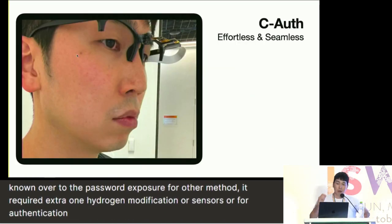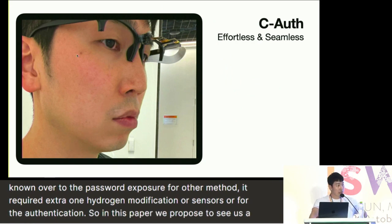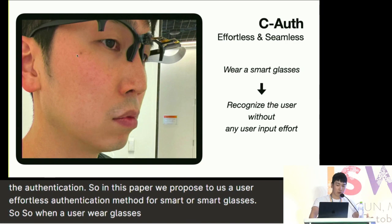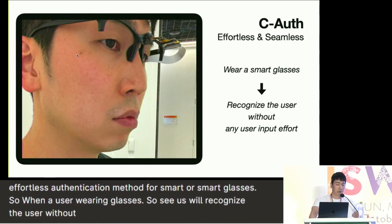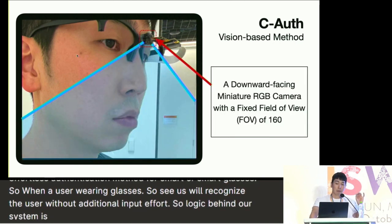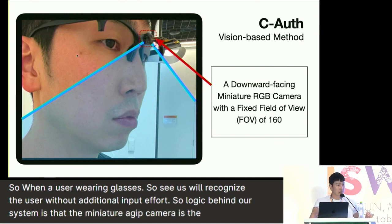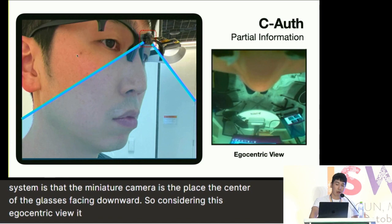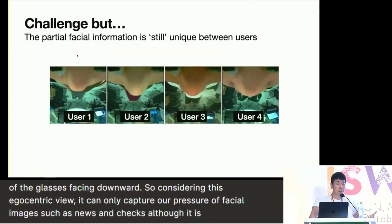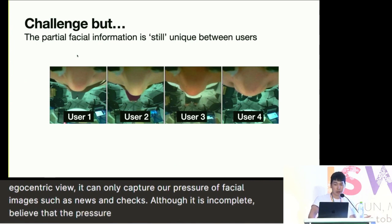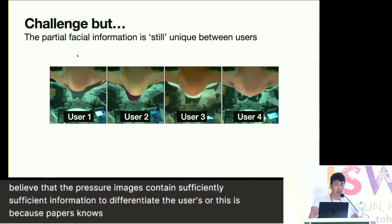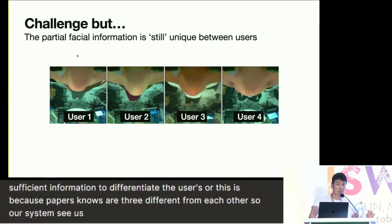In this paper, we propose CS, a user-effortless authentication method for smart glasses. When a user wears the glasses, CS will recognize the user without any additional input or output. The logic behind our system is that a miniature RGB camera is placed at the center of the glasses, facing downward. From this egocentric view, it can only capture partial facial images such as the nose and cheeks. Although incomplete, we believe these partial images contain sufficient information to differentiate users, because people's noses are totally different from each other.